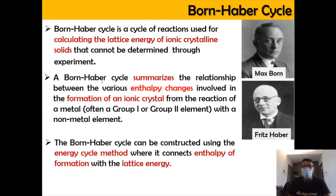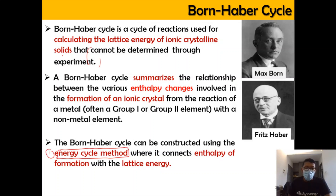Born-Haber cycle is a cycle used to calculate the lattice energy of ionic crystalline solids where some crystalline ionic solids cannot be determined through experiment, so the Born-Haber cycle is a better way to calculate lattice energy. It summarizes the enthalpy changes for the ionic crystal that usually happen between a metal and a non-metal. The Born-Haber cycle is constructed using the energy cycle method, and was proposed by two scientists: Max Born and Fritz Haber.